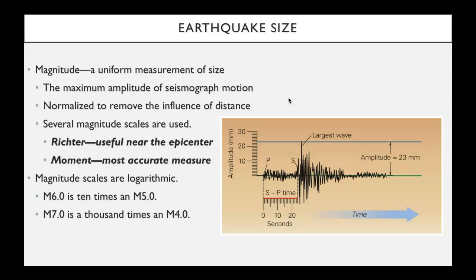The moment magnitude is usually given after the Richter, and that's where a specialist — a seismologist — has gone in and figured out the fault geometry and how big the fault rupture was, and tweaked that Richter scale a little bit to relate it to the size of the rupture along that fault.